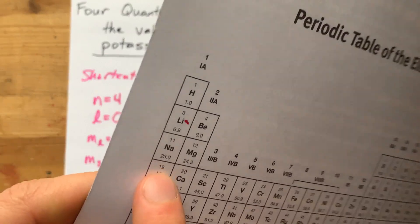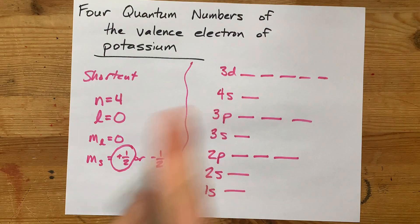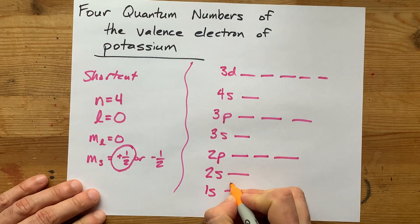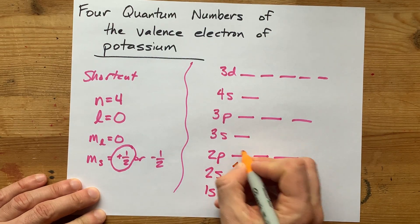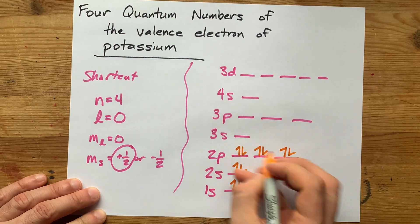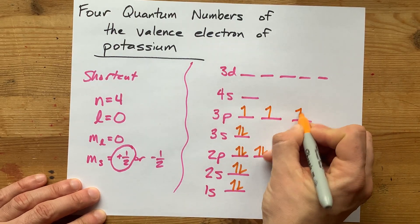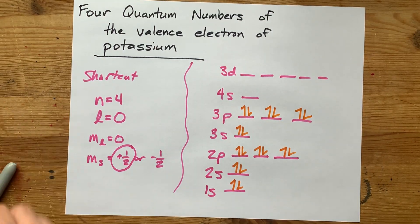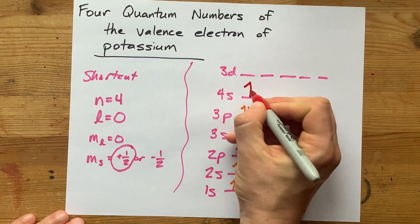Now, because potassium is element number 19, we're worried about where the 19th electron is. 1, 2, 3, 4, 5, 6, 7, 8, 9, 10, 11, 12, 13, 14, 15, 16, 17, 18. Oh, here is number 19.